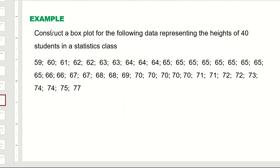Our first example: construct a box plot for data representing the heights of 40 students in a statistics class. Looking at the data, we can see it is already arranged in order. If it were not, we would need to arrange it in ascending order, because in constructing the box plot we need to find the quartiles, and the data must be sorted.